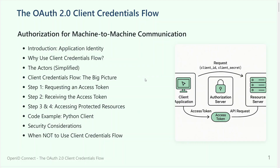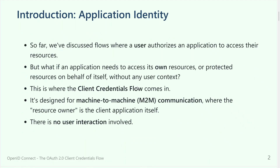It's a quite simple flow, but quite effective when you need an application to connect to an API on another application — which happens, for instance, in batch processes that run behind the scenes, a cron job that needs to access multiple machines, collect resources, do some transformation, and push the information to other systems. It's the best flow for those scenarios.